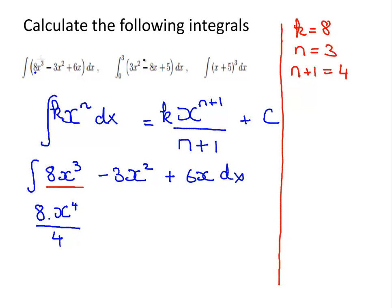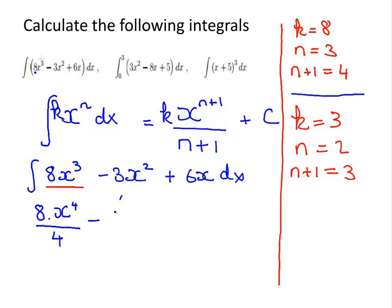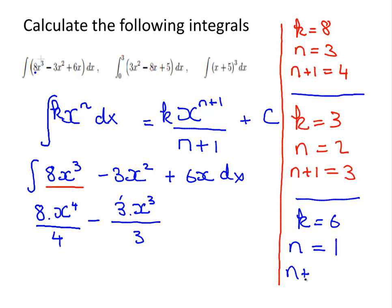Next, for minus 3x squared: k is equal to 3, n is equal to 2, and n plus 1 is equal to 3. So the integral of that term is 3 times x to the power of 3 divided by 3. Finally, for 6x: k is equal to 6, n is equal to 1, and n plus 1 is equal to 2. So we have plus 6 times x squared all over 2.